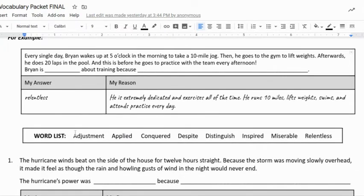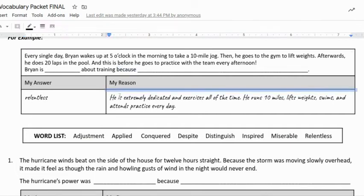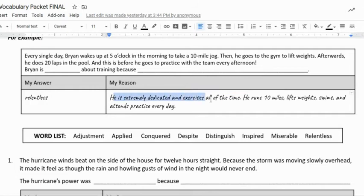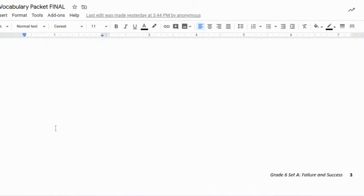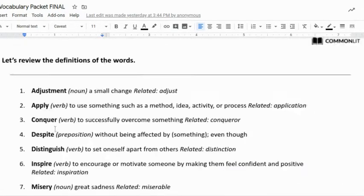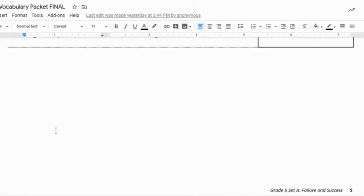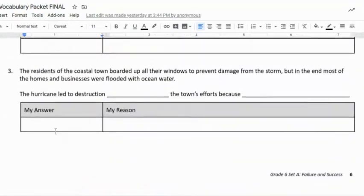So the blank here: 'Brian is blank about training.' Because you look at your word list, which of these words best fit? I chose the word 'relentless' and I said this: he is extremely dedicated. So 'Brian is relentless about his training because he is extremely dedicated and exercises all the time. He runs 10 miles, lifts weights, swims, and attends practice every day.' Relentless—again, the word relentless is defined up here, you practice it in your context clues, and you've done the matching beforehand. Do that for each of these scenarios.